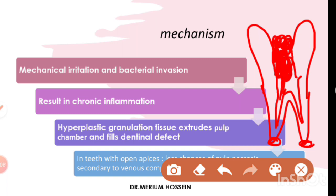As the pulp tissue increases in size, there is going to be pressure on the apex. As veins and arteries enter the tooth from the apices, if the apex is open the veins do not get compressed. But if the apex is closed — for example in an adult patient's molar — there is a chance of venous compression and the blood supply to the tooth is cut off.